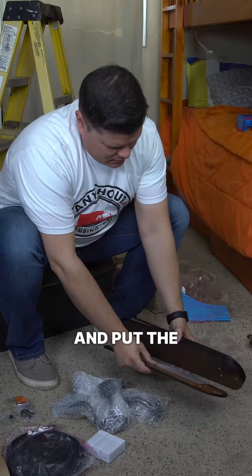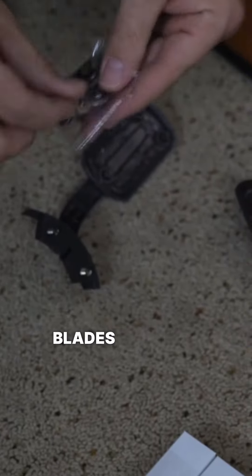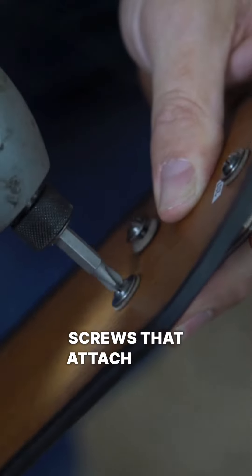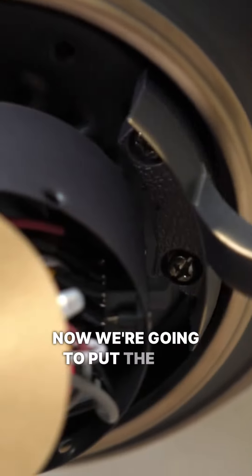Nice. I'm going to take a few minutes and put the fan blades together. You've got the piece that holds it to the motor, you've got the blades, and then there's usually screws that attach them. So give me a second. Now we're going to put the fan blades on.